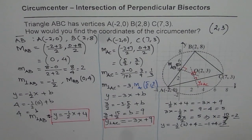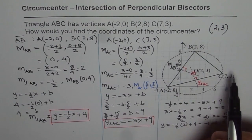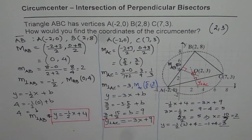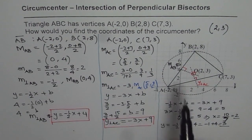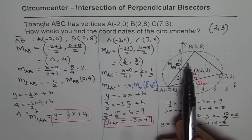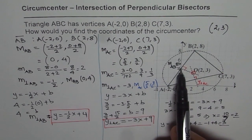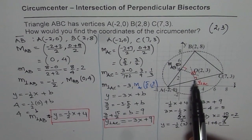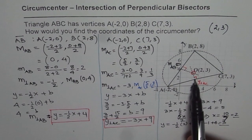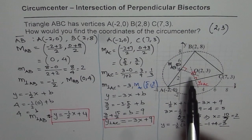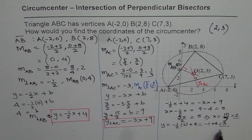Let's recap the process. Select two sides — I chose AB and AC since they gave easy values. Find the midpoint of each side, find the slope of the line, then take the negative reciprocal for the perpendicular bisector slope. Use the midpoint and slope to get the equation, then repeat for the second side.